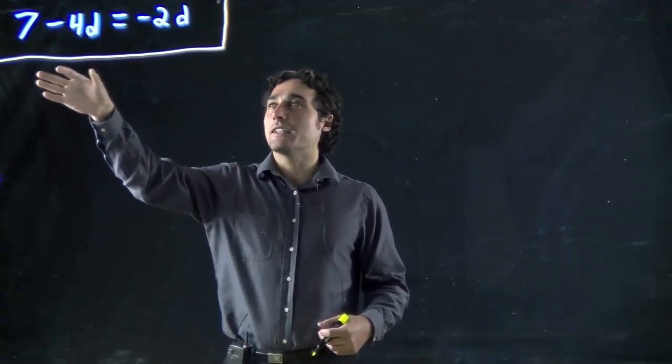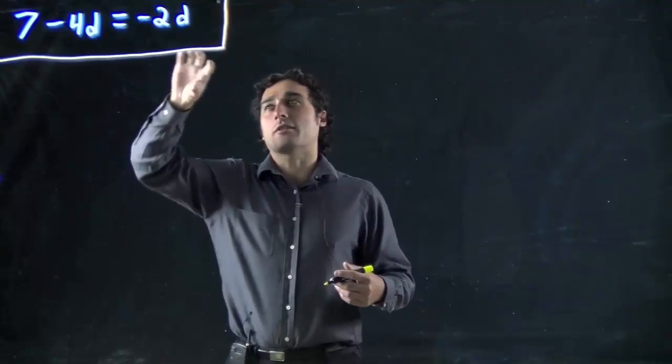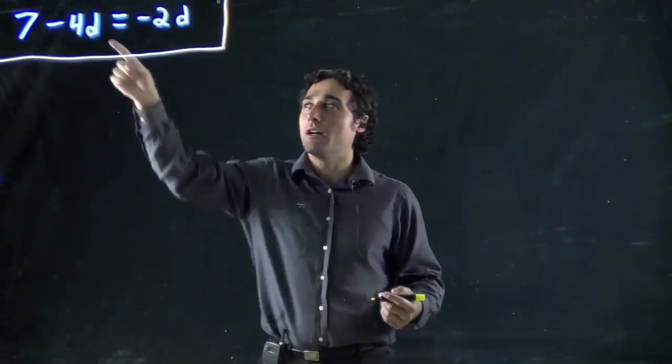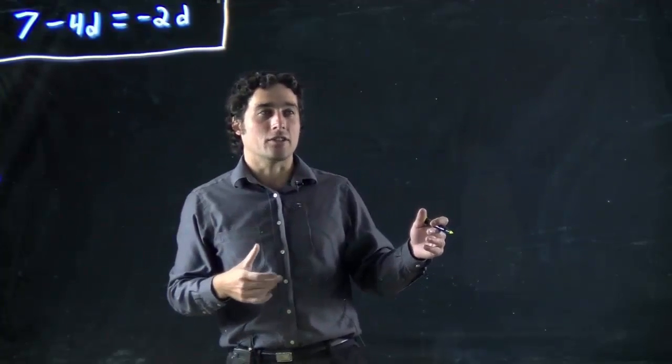In this case we could bring the 4d to this side—that's the easiest, because otherwise you have to bring 2d to this side and bring 7 over there, which is just more work. So we'll bring 4d to this side because it doesn't matter what side we end up getting the answer on, it's the same.